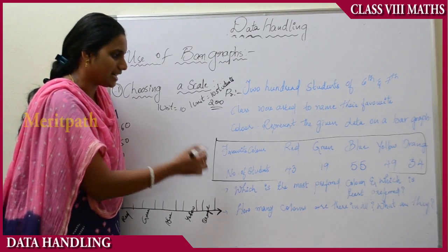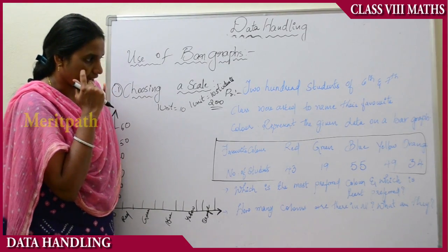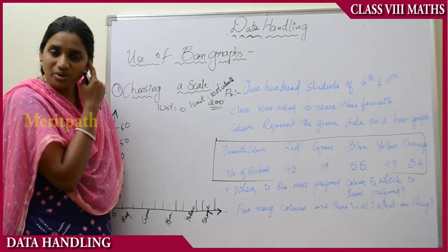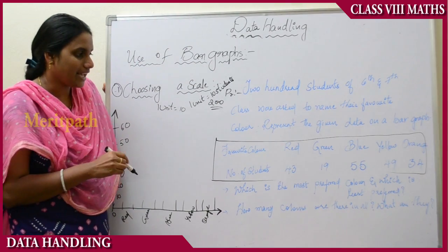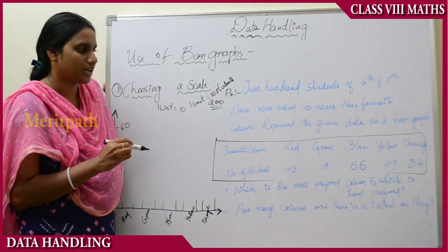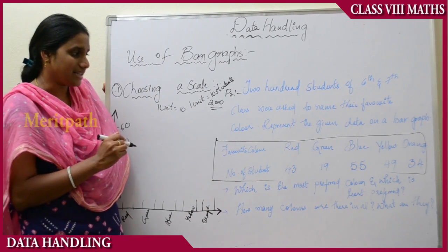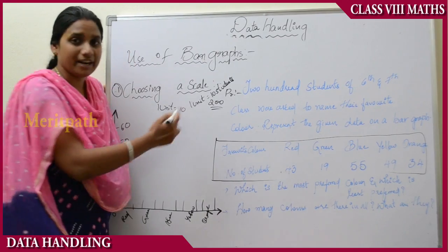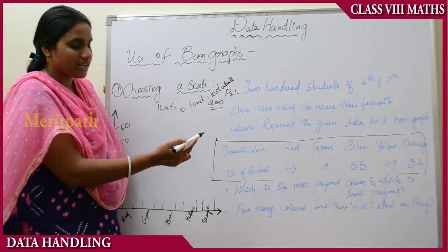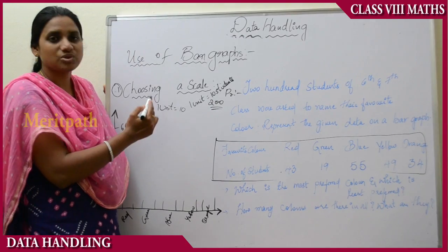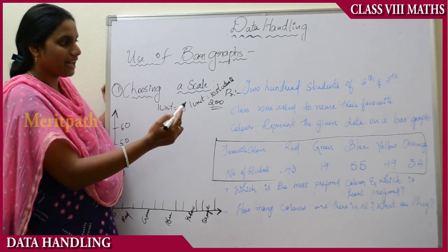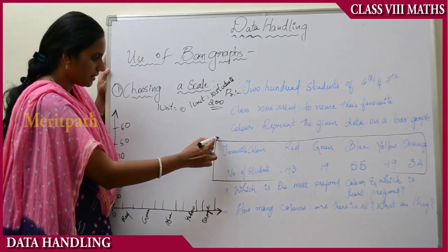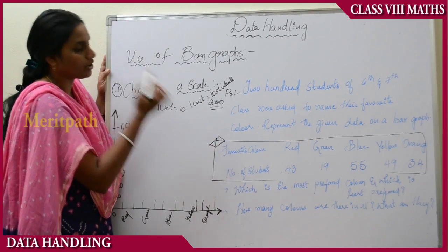The favorite colors are red, green, blue, yellow, and orange. The number of students are: 43 for red, 19 for green, 55 for blue, 49 for yellow, and 34 for orange. So 43 students voted for red, 19 for green, 55 for blue, 49 for yellow, and 34 for orange. This is the table of information given to us.